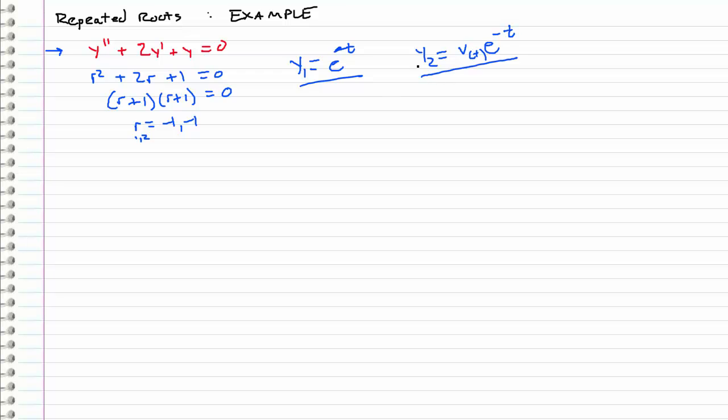So the first thing that we want to do is we want to plug y2 back into our differential equation. So let's go ahead and differentiate it twice so we can get expressions for y double prime and y prime. So y2 prime is equal to v prime times e to the negative t. You've got to do the product rule. Minus v times e to the negative t.